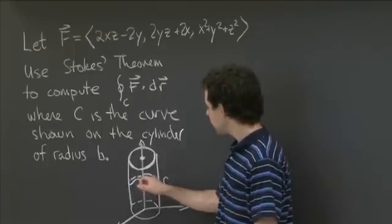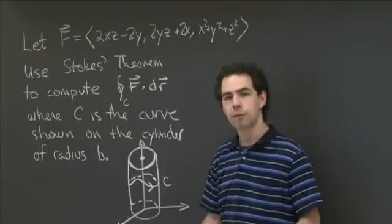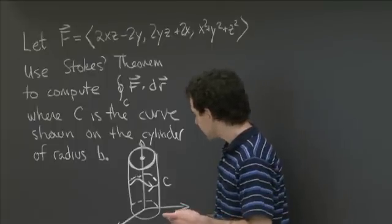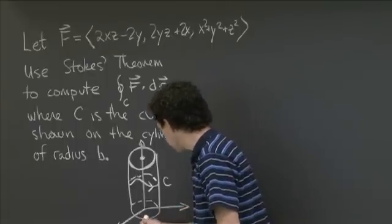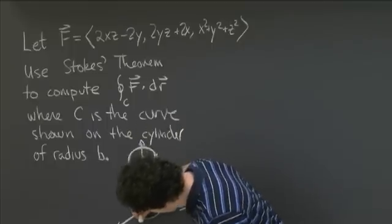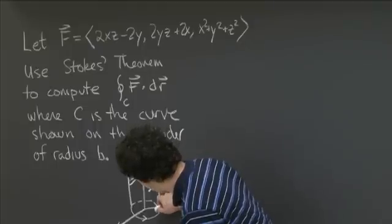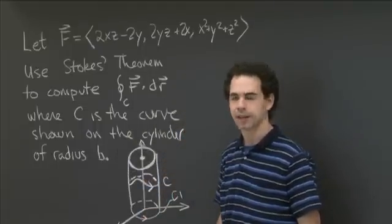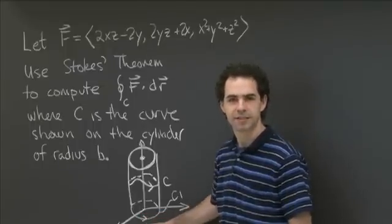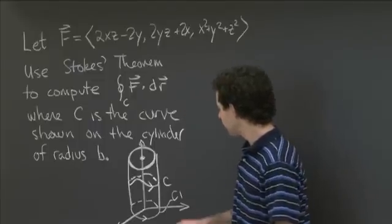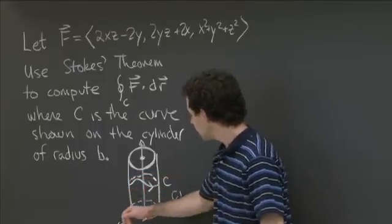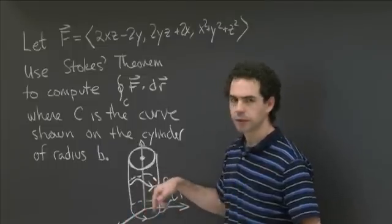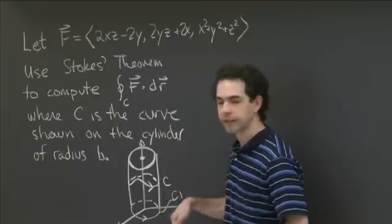We could use the piece of the cylinder with C as its upper boundary. For a natural lower boundary, we choose something nice and simple — the bottom circle in the plane z equals 0. I'll call that circle c1: the circle of radius b in the xy plane. We've got the top curve C and the bottom curve c1, and I've oriented them both going counterclockwise as you look down from the z-axis.